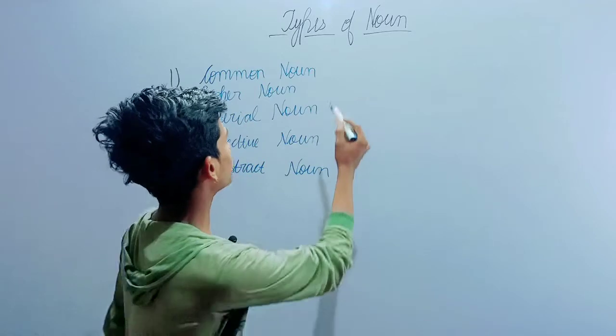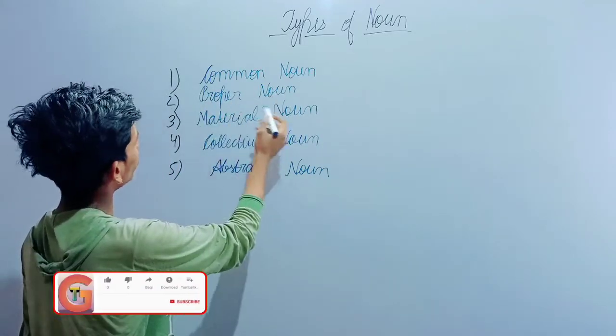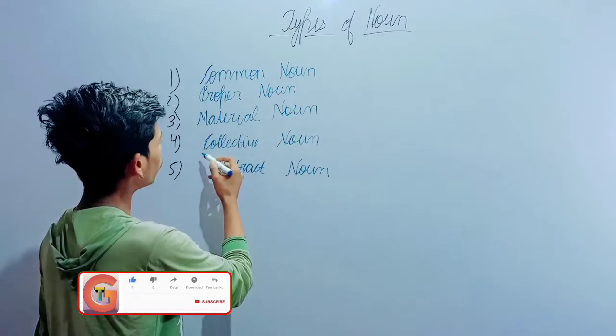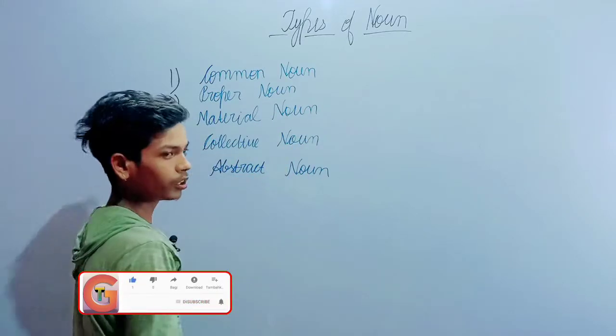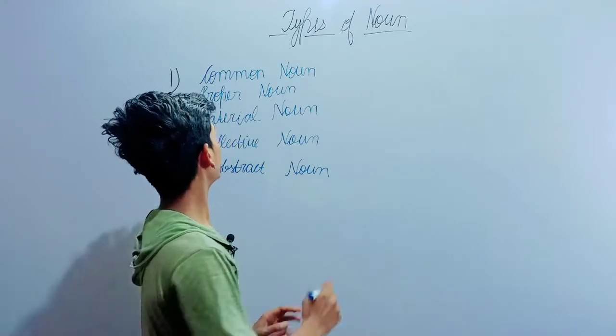Today we will discuss the types of noun. The types of noun are: first, common noun; second, proper noun; third, material noun; fourth, collective noun; and fifth, abstract noun. In today's video, we will discuss the types and definitions.